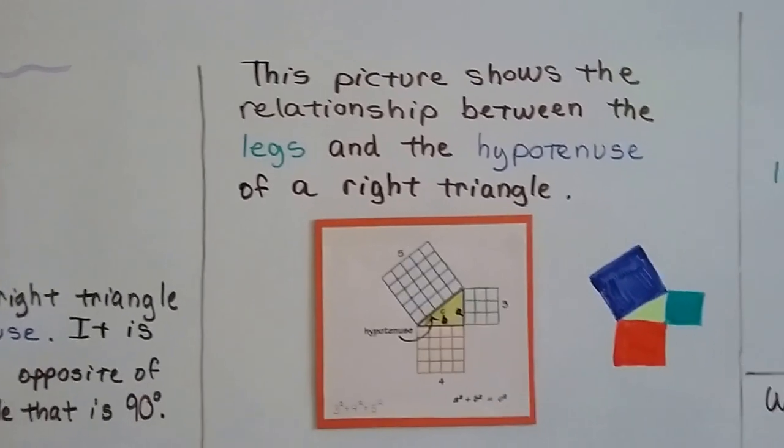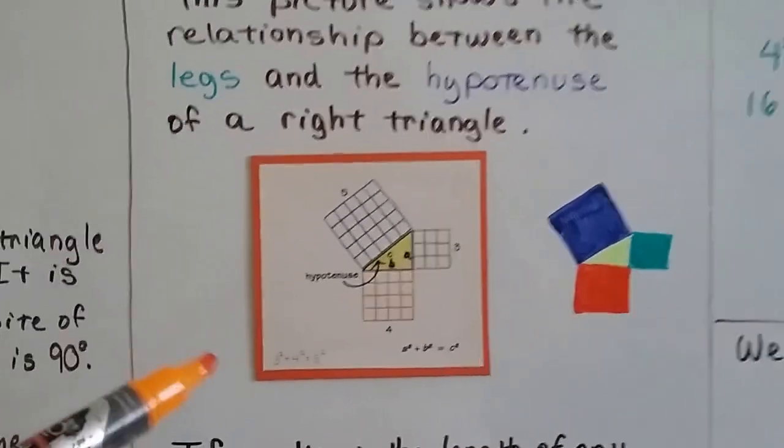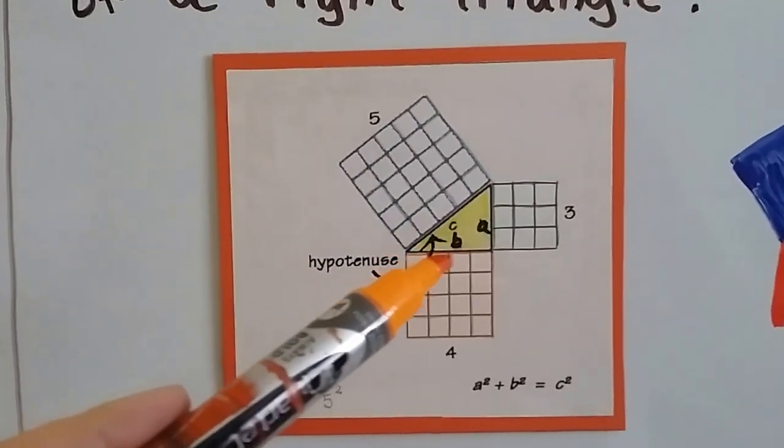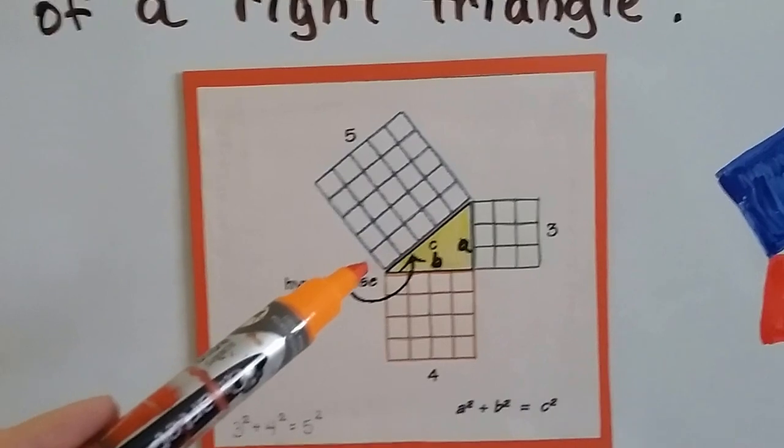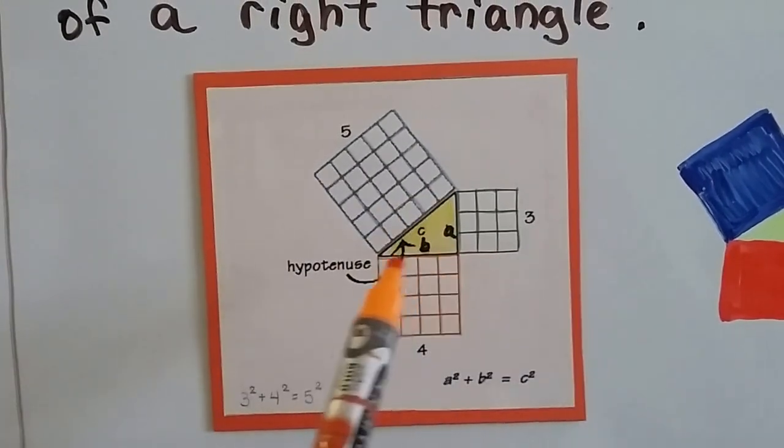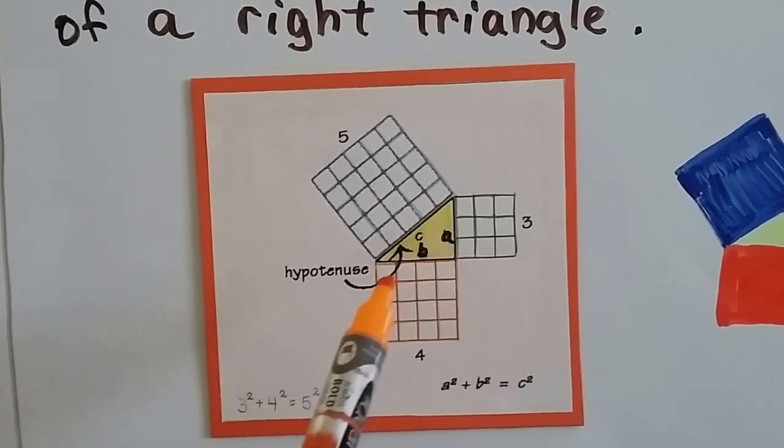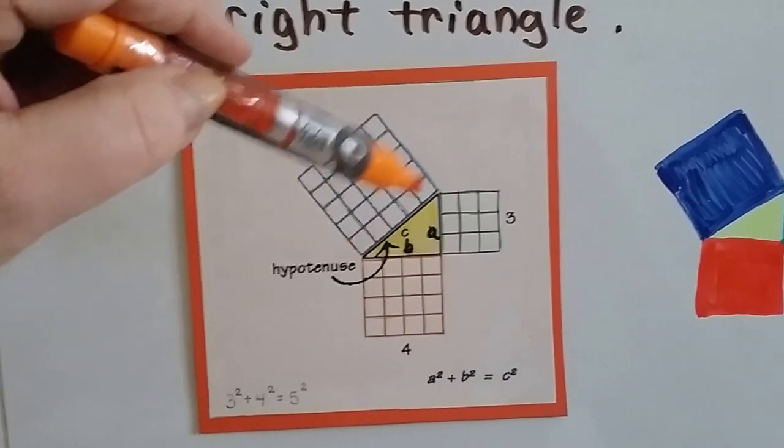So this picture shows the relationship between the legs and the hypotenuse of a right triangle. So if we look at this very closely, we can see we've got a, b, and the hypotenuse c. And we can see this is 3 units, this is 4 units, 1, 2, 3, 4. And this one has 1, 2, 3, 4, 5 units.